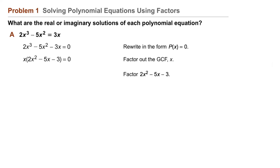We write x times the trinomial 2x squared minus 5x minus 3 equals zero. Then we'll factor the quadratic trinomial 2x squared minus 5x minus 3 into the product of two binomials: 2x plus 1 and x minus 3.